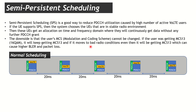First, let's understand how normal VoLTE scheduling works. Under a normal scenario, a user will get a PDCCH allocation. It will read the PDCCH and that will tell the user where its VoLTE packet is. The user reads the PDCCH, finds the VoLTE packet, then waits 20 milliseconds and reads the PDCCH again for the next VoLTE packet. This repeats every 20 milliseconds.